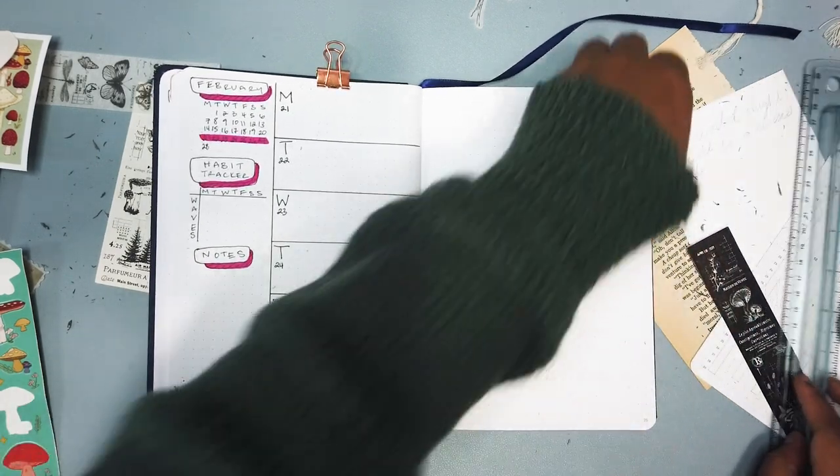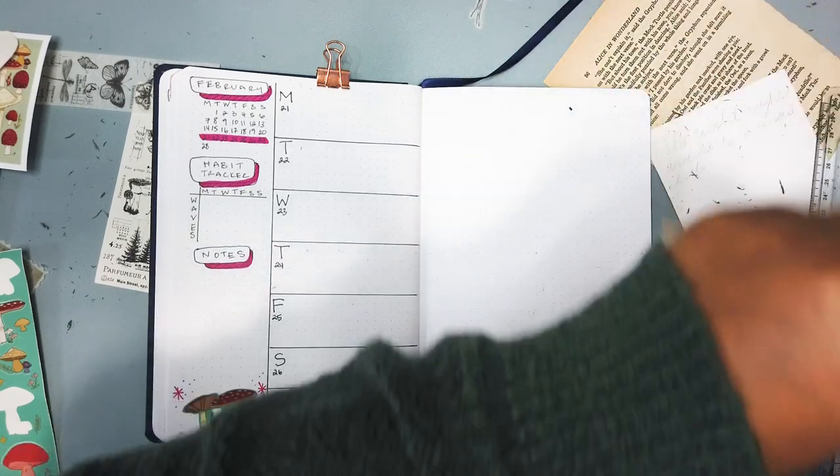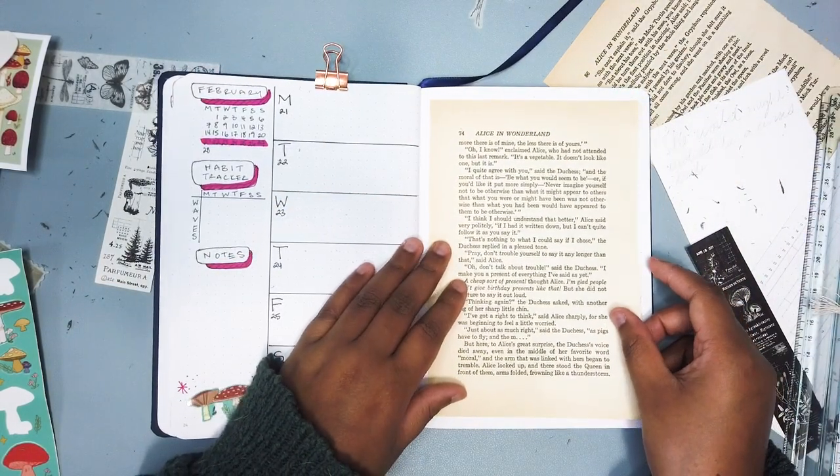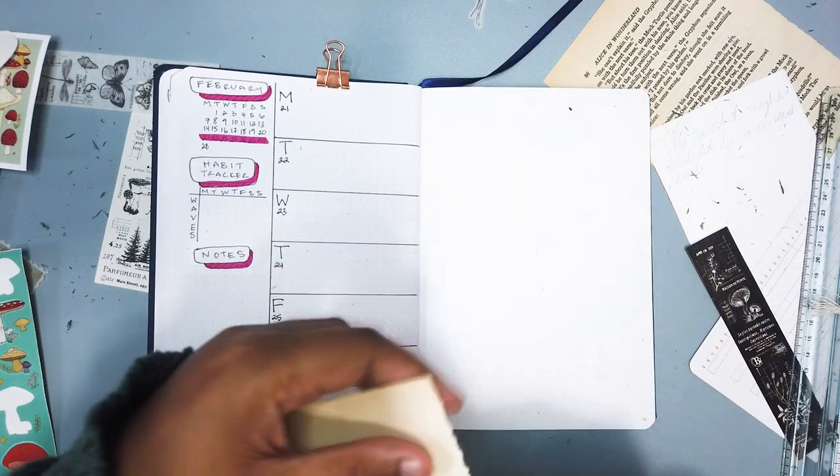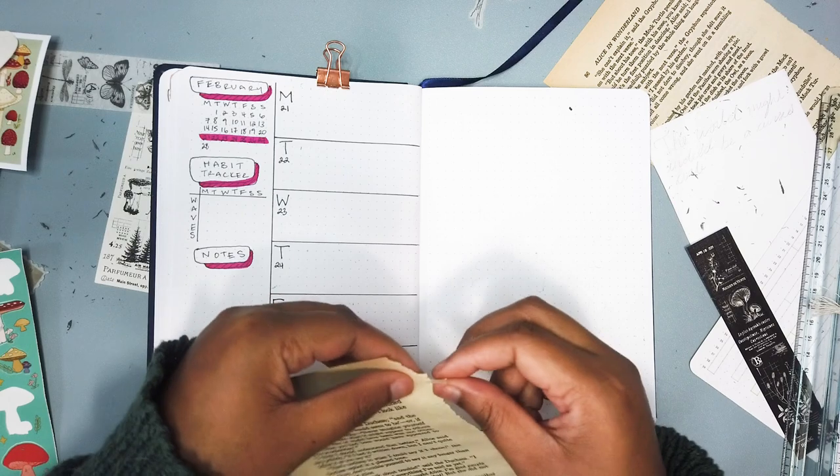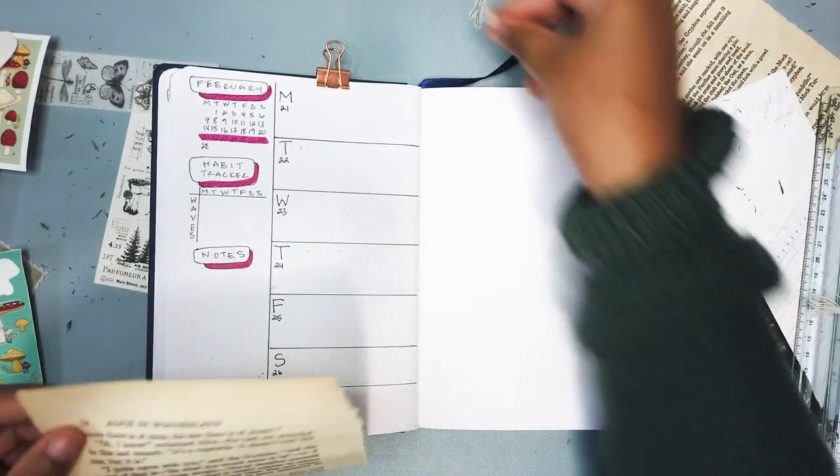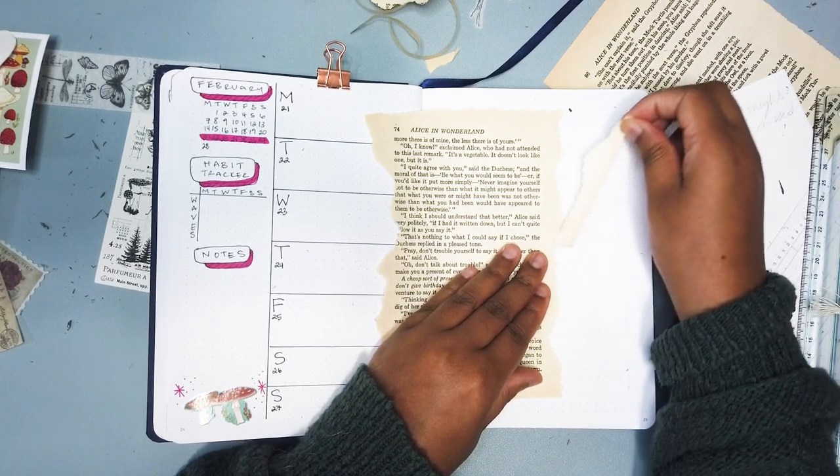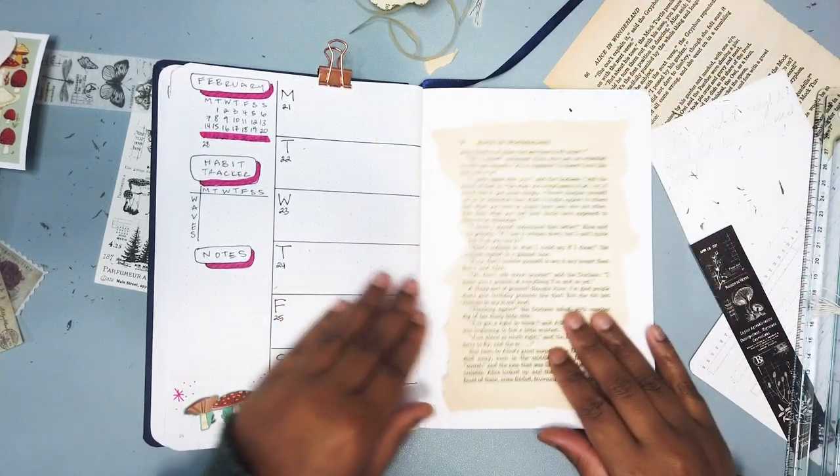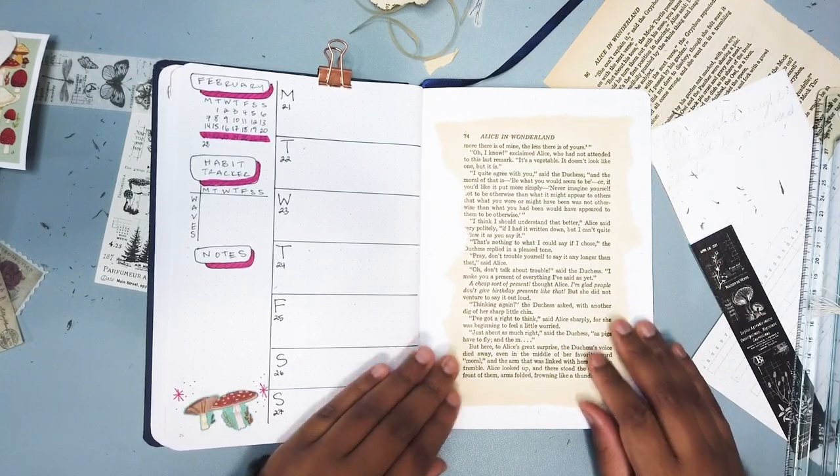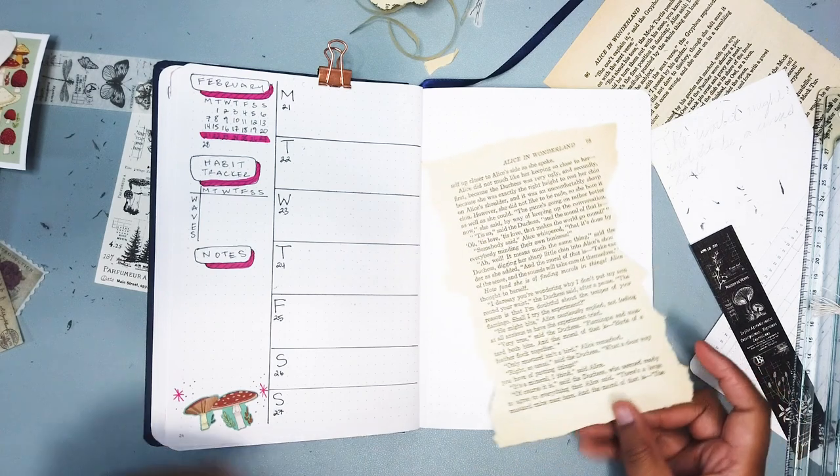So now what I'm going to be doing is I have a quote that I'm going to put on the next page over there. So I'm using again these Alice in Wonderland book pages and just ripping them to make them look a little bit more rough and sticking them down as a background to put this quote on.